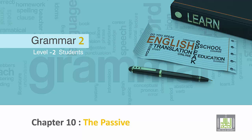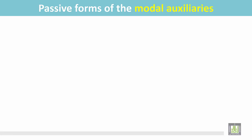Grammar 2 for Level 2 students. Chapter 10: The Passive. Passive forms of the modal auxiliaries.